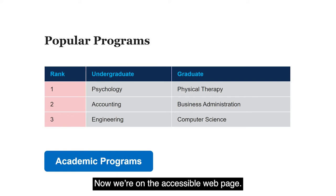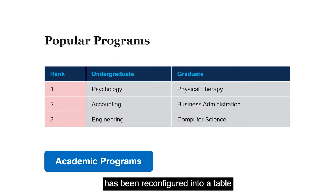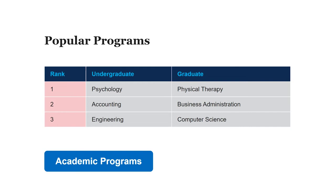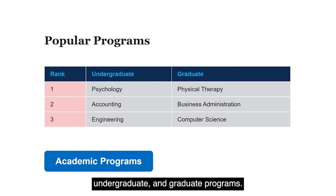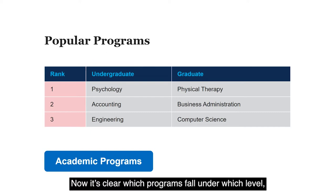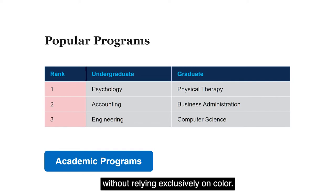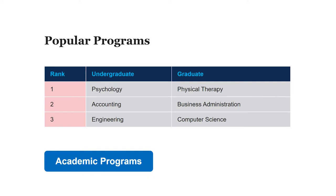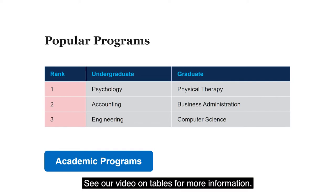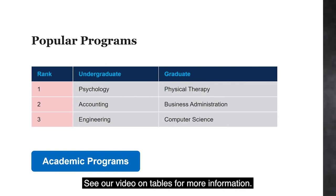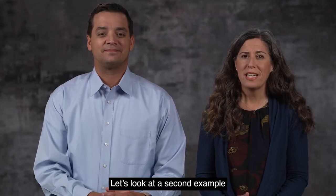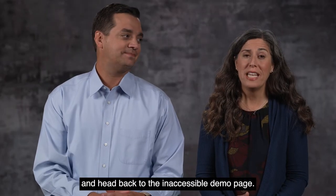Here's one way to fix this problem. On the accessible web page, you can see that the same information has been reconfigured into a table with column headers indicating the rank — undergraduate and graduate programs. Now it's clear which programs fall under which level without relying exclusively on color. See our video on tables for more information.